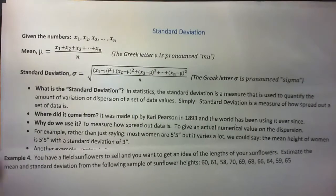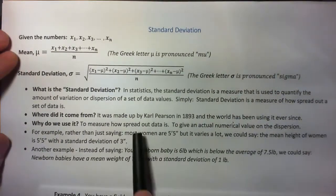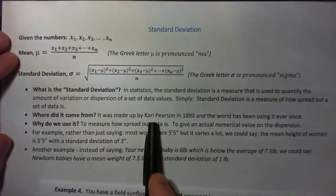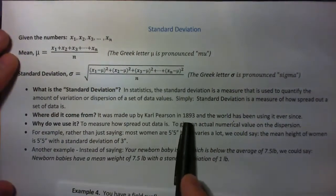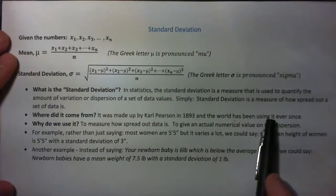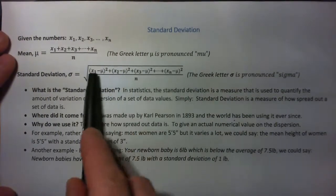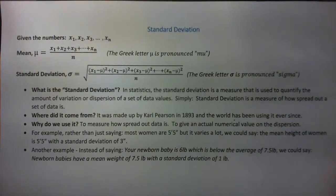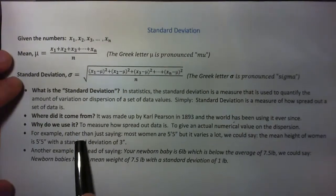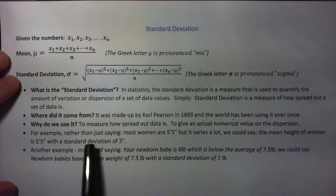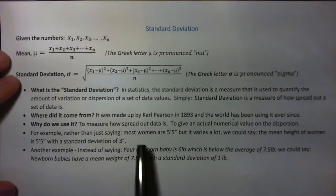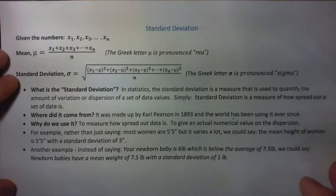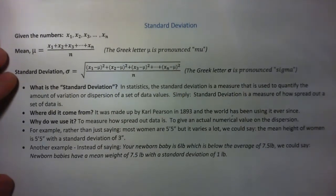Where did it come from? It was made up by a mathematician called Karl Pearson in 1893, and the world's been using it ever since. This is simply a man-made thing — it's not found in nature. So let me give you two examples of common standard deviation.